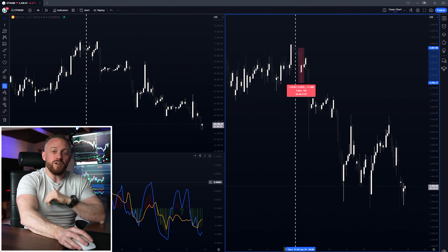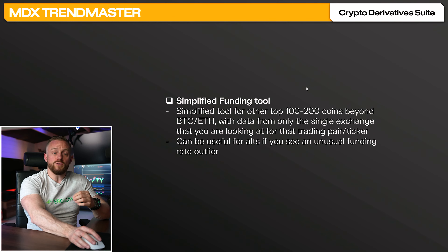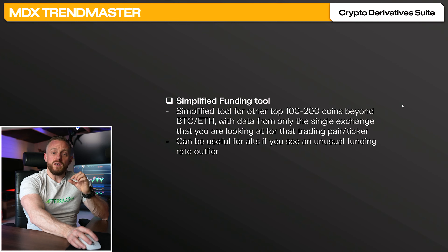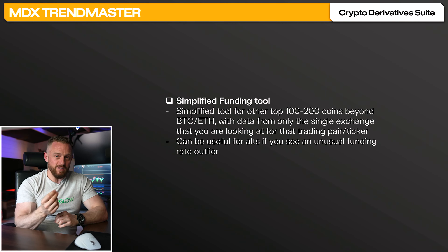If you also like to trade altcoins, MDX Algo also has a simplified version of the funding tool for the top one to two hundred blue chip coins beyond BTC and ETH. This tool is more simplified — it only has the funding rate data from the trading pair that you're looking at. Let's head back into TradingView and look at Dogecoin as an example, loading the Binance pair. Come into the indicator menu and go to Crypto Derivative Suite.